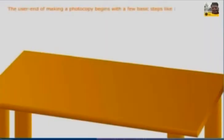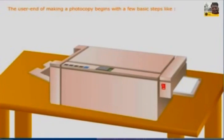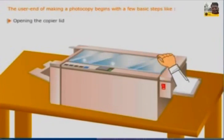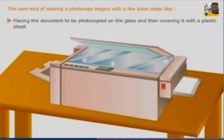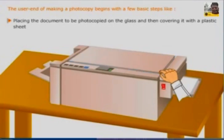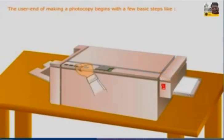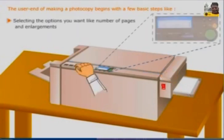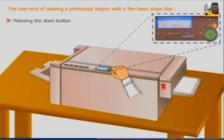The user end of making a photocopy begins with a few basic steps like opening the copier lid, placing the document to be photocopied on the glass and then covering it with a plastic sheet, selecting the options you want like number of pages and enlargements, and pressing the start button.